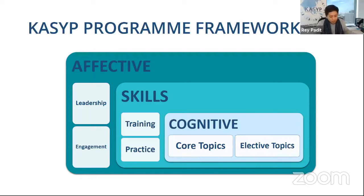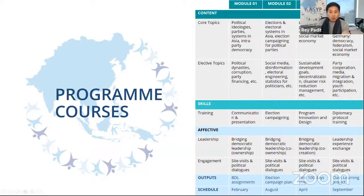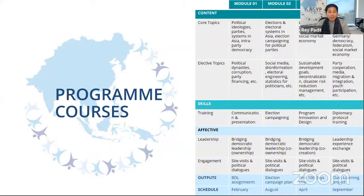Here is an example of the content for each module. You have Modules 1 through 4. In terms of content, you have core topics and elective topics. For skills, you have training in communication and presentation, election campaigning, program innovation and design, and diplomacy protocol. You also have an affective component focused on leadership and engagement, and of course there are outputs to be delivered by the participants.